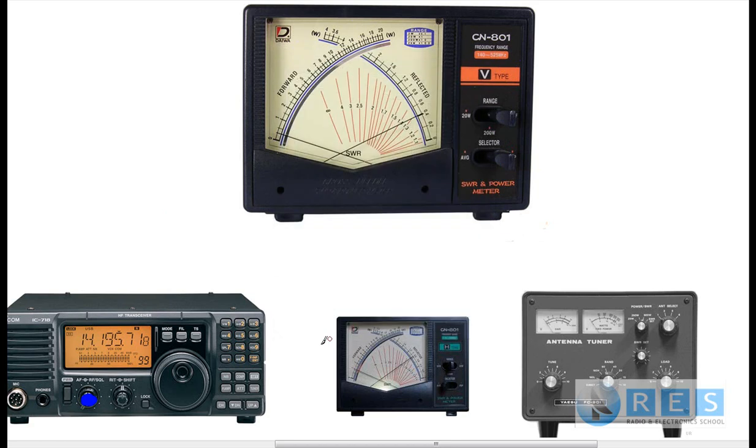The SWR meter should be straight after the transmitter and before the ATU. And the ATU would be connected to the antenna. The really good thing about a cross-needle type SWR meter is that it requires no adjustment.